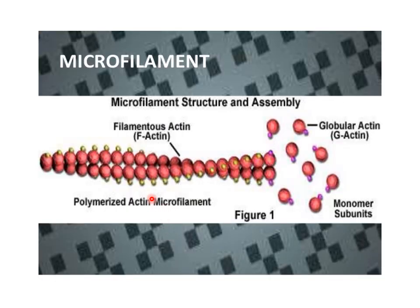Looking at the structural assembly of the microfilaments: microfilaments are made up of actin proteins which have two subunits — the globular actin, called G-actin, and the filamentous actin, called F-actin. These subunits of the actin proteins are polymerized in a manner that they form a double helix structure. All the globular heads are assembled on one side and the F-actins are assembled on the other end, so that other materials can be attached to the filamentous actin.